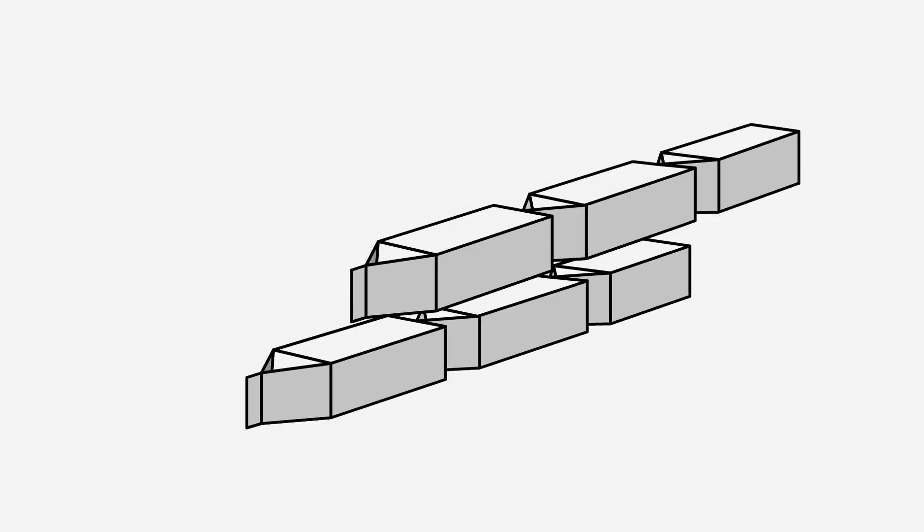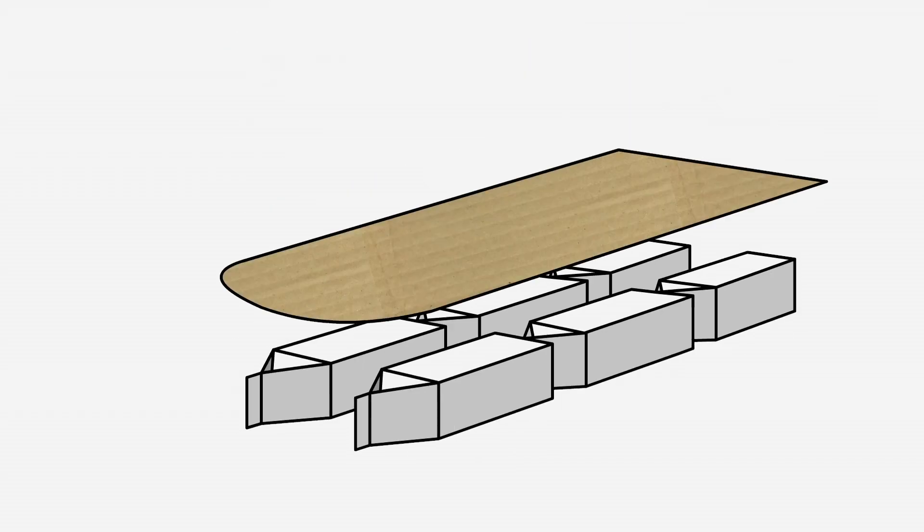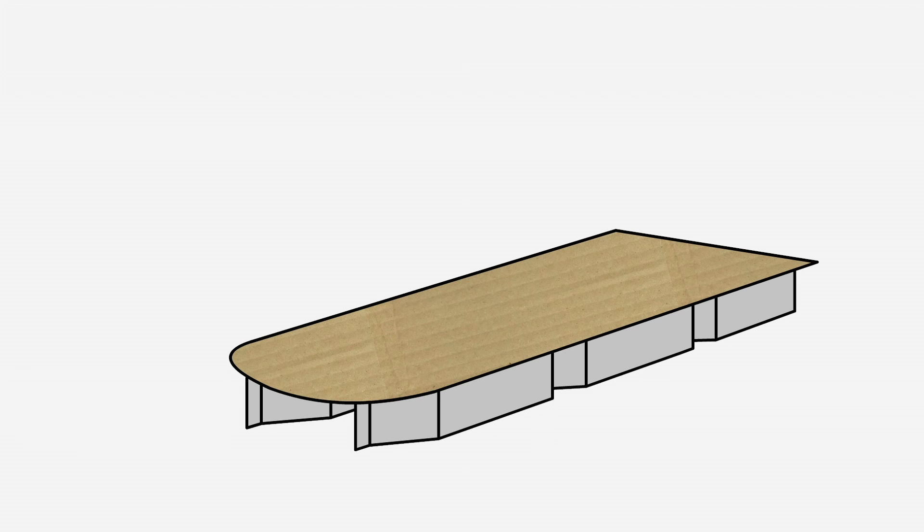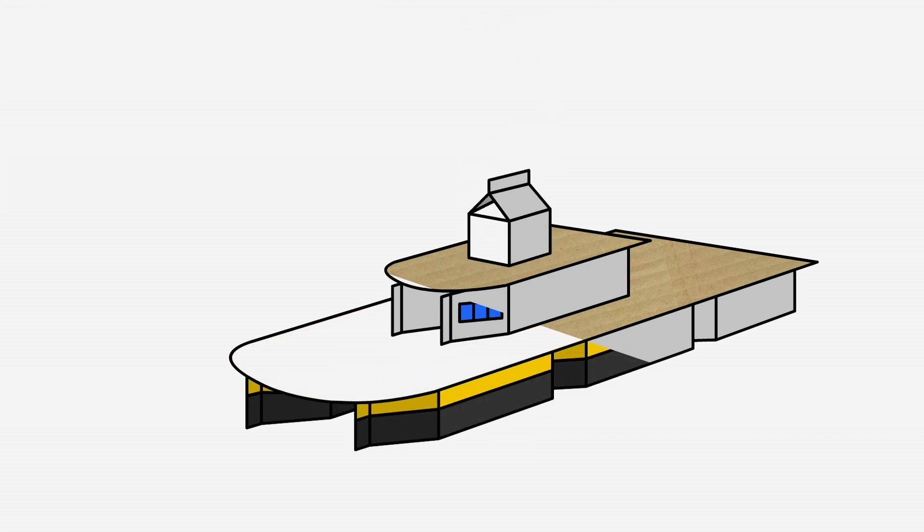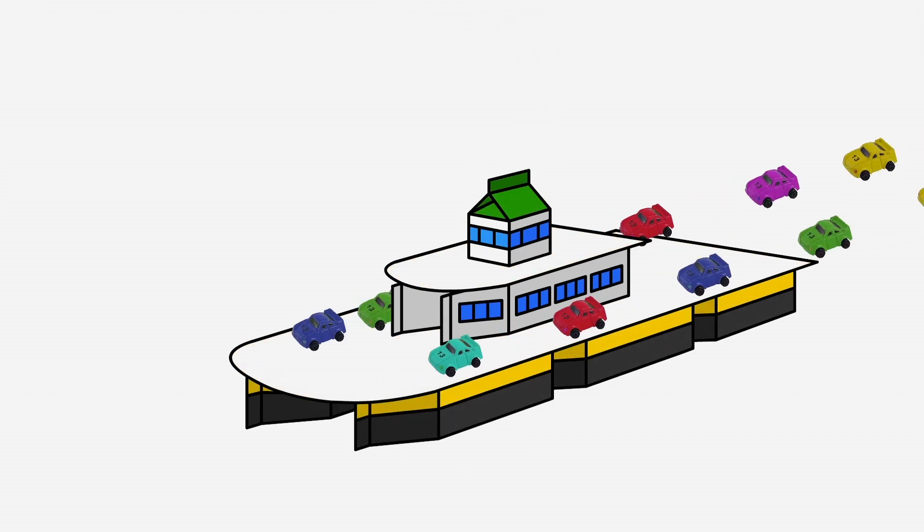You can also turn your catamaran into a car ferry. Lay out six cartons in two lines. Cover them with a large piece of cardboard. Glue two cartons on top of that. Then another piece of cardboard. And finally, a small carton on top. Then you can paint it and fill it with cars.